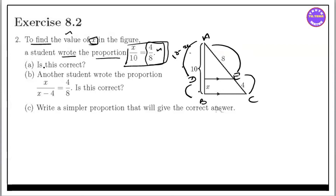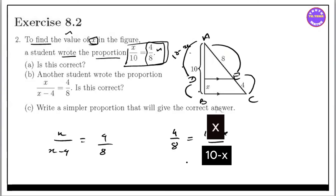Another student wrote the proportion — x by x minus 4 equal to 4 by 8. Now, 4 by 8 is equal to 10 minus x by x. It is not correct. Write a similar proportion — a similar proportion will give the correct answer.